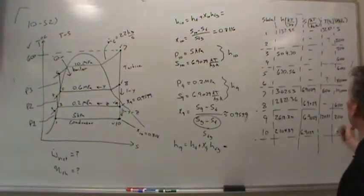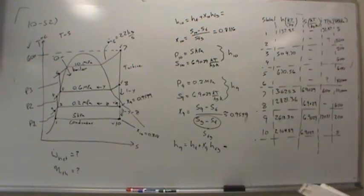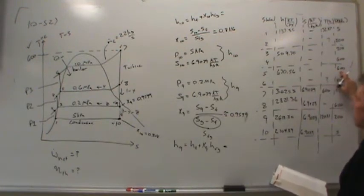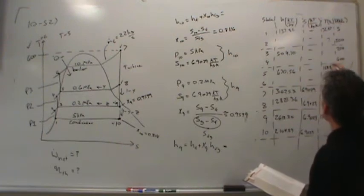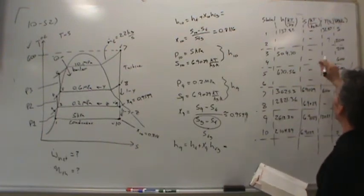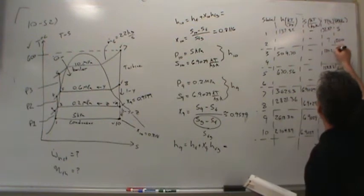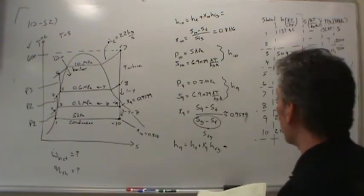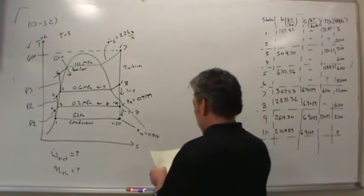I may as well jot down the temperatures for reference. The saturation temperature at 600 kilopascals is 158.83, and at 200 kilopascals the saturation temperature is 120.21. Now we've solved all but three states. In order to solve the rest of these states, we'll have to use some isentropic pump equations. So let's do that next.